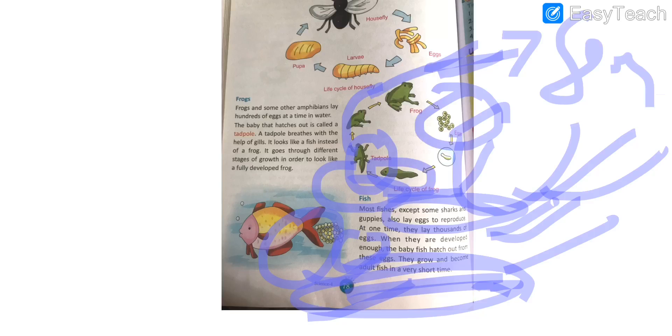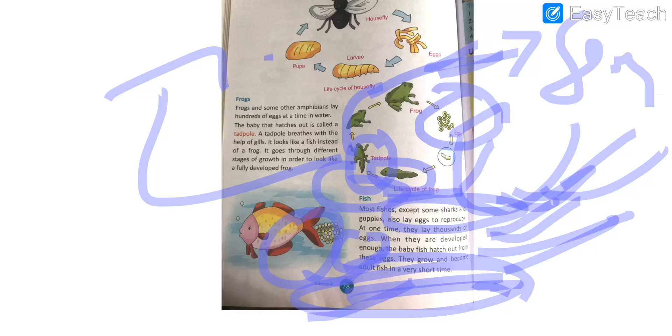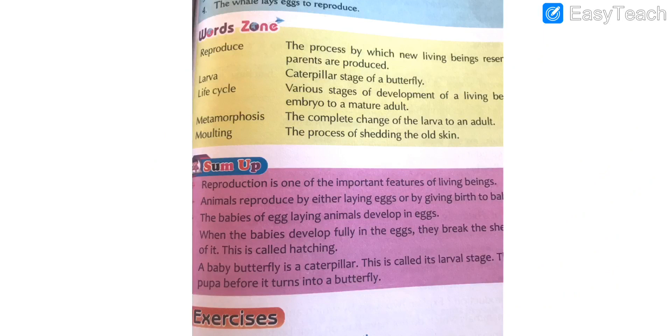Most fishes lay eggs in water to reproduce, and at a time they lay about thousands of eggs. When the baby fish comes out of these eggs, it grows and becomes an adult in a very short period of time. This is the difference between different kinds of animals — some animals take a very long time to reach adulthood, while some develop into an adult in a very short span of time.